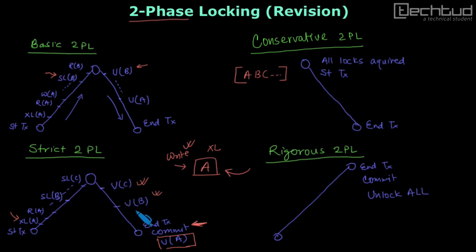Here you can see that before transaction end or before commit, we can release shared locks. But in rigorous 2PL, even this is not allowed. When transaction ends and it is committed then simultaneously, we release all the locks. We release all the lock at once and that's why it doesn't have any shrinking phase.